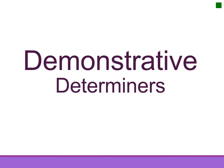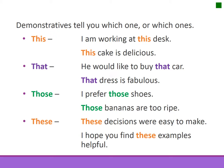Demonstrative determiners tell you which one or ones. The demonstrative determiners are: this, that, those, and these.